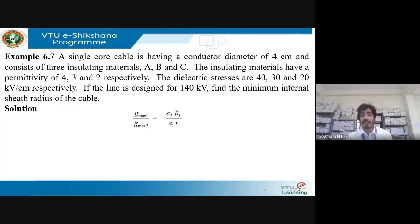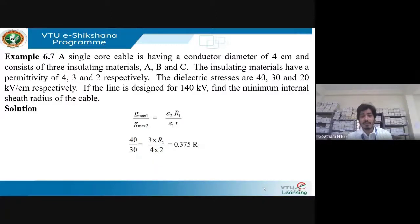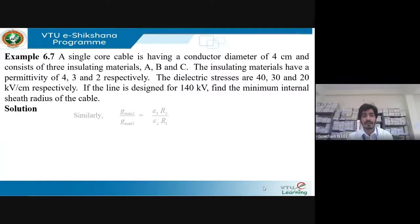Gmax1 / Gmax2 = (ε2 × r1) / (ε1 × r), where r is the conductor radius. Substituting Gmax1 = 40 kV/cm, Gmax2 = 30 kV/cm, ε2 = 3, ε1 = 4, and small r = 2 cm, and solving for the unknown r1, the value of r1 comes out to 3.55 cm.